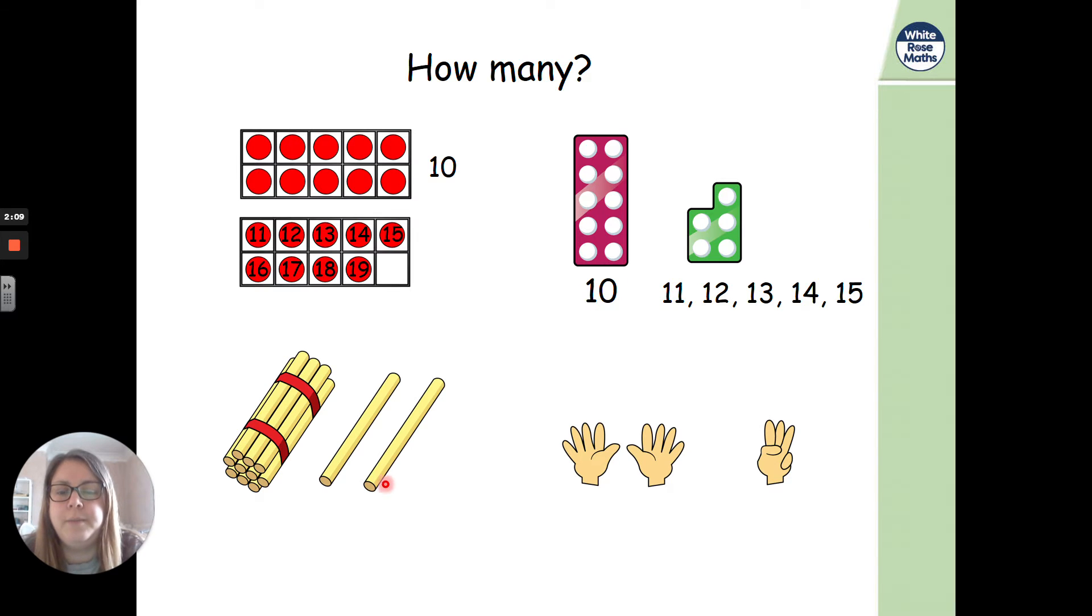So remember, I hope you've been counting on from 10. For our sticks, we've got 10, 11, 12. And then for our fingers, we've got 10, 11, 12, 13. So well done if you said 19, 15, 12, and 13. Fantastic.